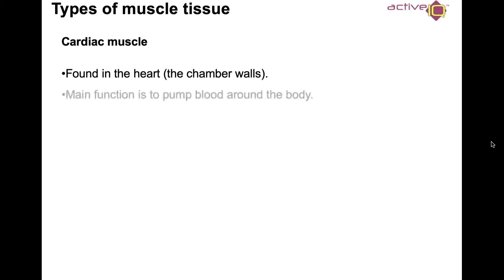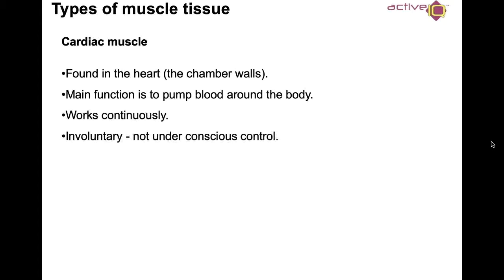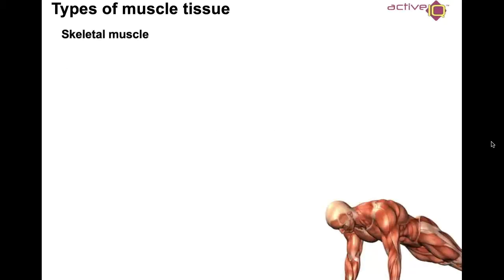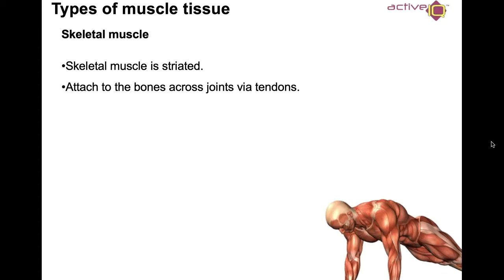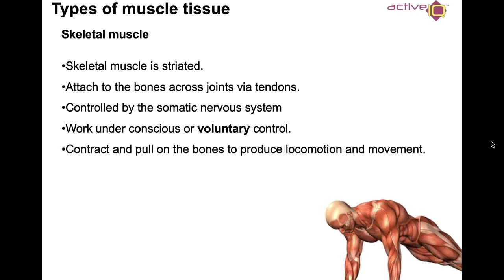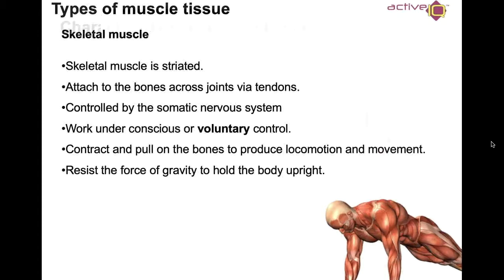Cardiac muscle is found in the heart — in the chambers and walls — and its main function is to pump blood around the body. It works continuously and is involuntary, so it's not under our conscious control. Contraction of the heart is controlled by the sinoatrial node. Skeletal muscle tissue is striated, attaches to bones across joints via tendons, is controlled by the somatic nervous system, and works under voluntary control. It contracts and pulls on bones to produce locomotion and movement, and resists the force of gravity to hold the body upright.